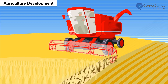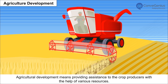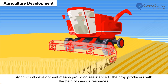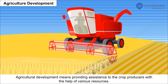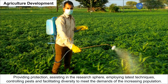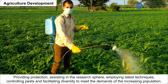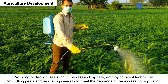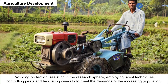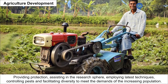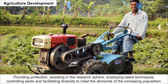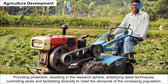Agricultural Development means providing assistance to crop producers with the help of various resources — providing protection, assisting in the research sphere, employing latest techniques, controlling pests and facilitating diversity to meet the demands of the increasing population.